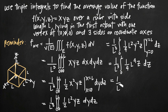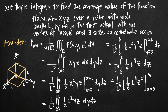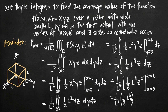Now we integrate with respect to z. Treating l as a constant, the integral of z is (1/2)z², so we get (1/2) times (1/4) which is (1/8), giving us (1/8)l⁴z², evaluated from z = 0 to z = l. Plugging in l gives l⁴ times l² = l⁶; plugging in 0 gives 0. Multiplying (1 over l cubed) by (l⁶ over 8), the l cubed cancels, leaving l cubed over 8.